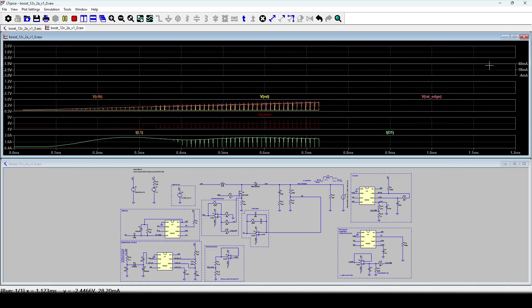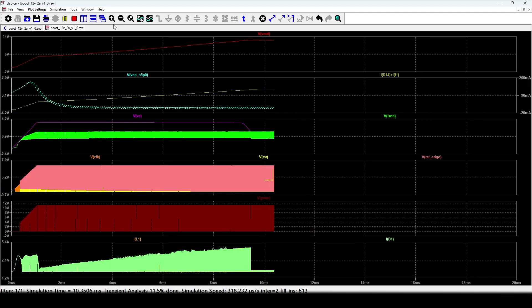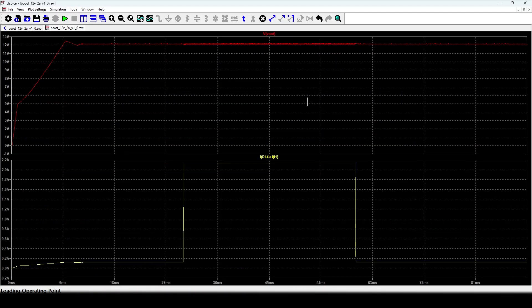Now I'm running the simulation. So the output voltage is constant at 12 volt. I have suddenly changed the load current from 50 milliampere to 2 ampere, but the output is pretty much stable.